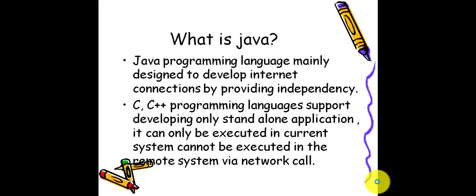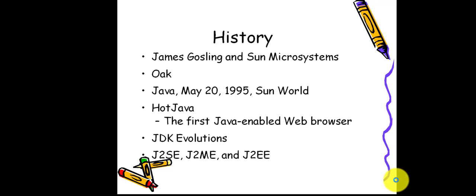What makes C and C++ programming languages not that popular is that C and C++ only support standalone applications and do not support internet applications like remote and network applications. I will tell you in a further video what is meant by standalone applications and internet applications.